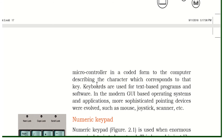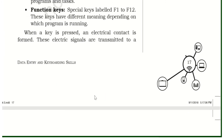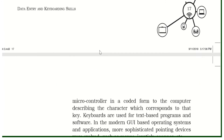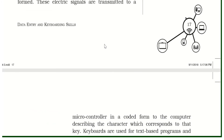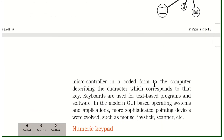The computer can understand its language — digital language, which means data in the form of 0s and 1s. When we press keys like A, B, C, or D on the keyboard, electrical signals are released and transmitted to the microcontroller, where they are coded into computer language.